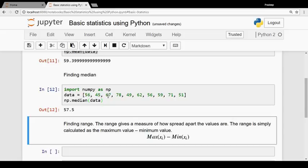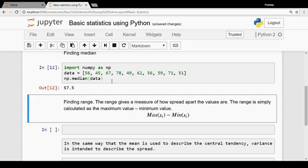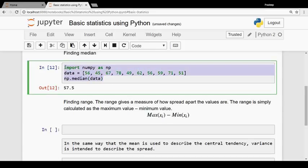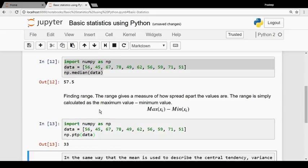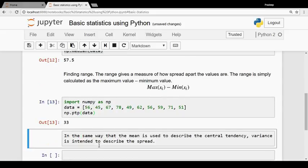Now let's look at the spread of the data. The first thing is finding the range. The range is calculated by taking the maximum value in your data minus the minimum value. We can use this function in Python. We get 33, which is the range of the data.